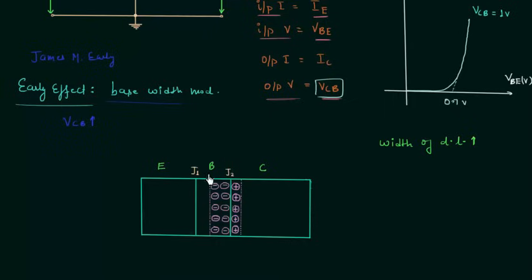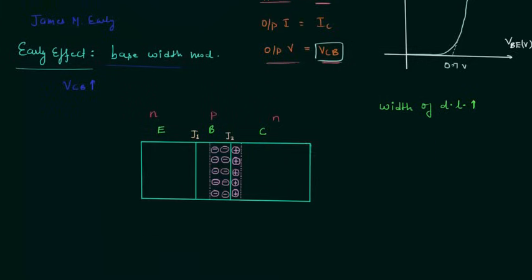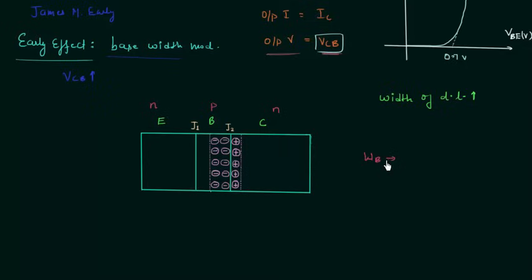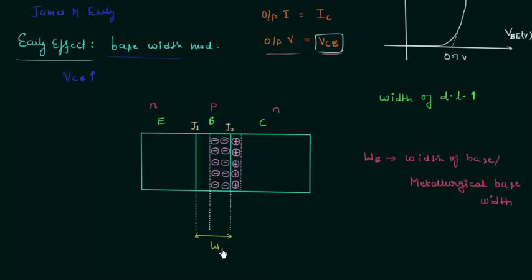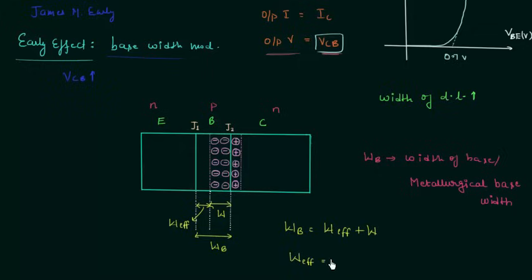The depletion layer will have negative immobile ions on the base side because we are considering NPN transistor, and positive immobile ions on the collector side. Let WB be the total metallurgical base width, and W be the width of the depletion layer penetrated into the base region. The width of the region with no depletion layer is W_effective. From this: WB = W_effective + W, so W_effective = WB minus W.